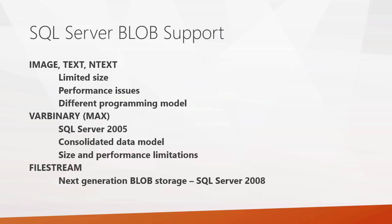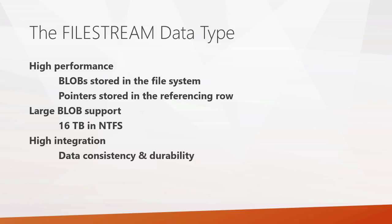So that's why with SQL Server 2008, Microsoft introduced the file stream data type. File streams are basically the next generation in blob storage, and they address a lot of the problems that these earlier data types had. With the file stream data type, it was high performance because your blobs are stored in the file system, so you didn't have that overhead and you didn't have that contention within SQL Server's buffer pool. You got as fast an access as you could get. Pointers were then stored in the referencing rows, so that's what allows data integrity to be maintained between the blob objects themselves and the rows they're associated with.